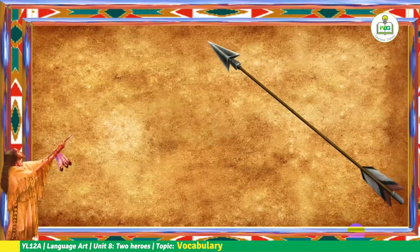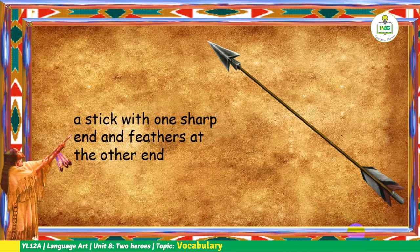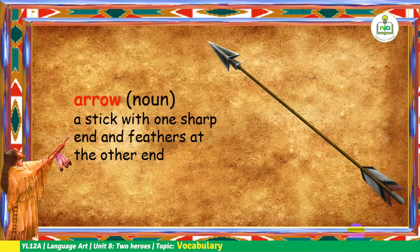I'm sure that you know this weapon. This one is a stick with one sharp end and feathers at the other. So this is what you call an arrow. Arrow is a noun.